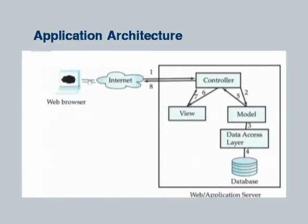This is a pictorial depiction of the same architecture — model, view and controller. A request comes to something called a controller which talks to the model, which is basically the business logic. When it gets a response back it talks to the view part of the code which formats it, returns it, and then that view is displayed to the user. This is an abstract model and the model itself talks to the data access layer which talks to the database.